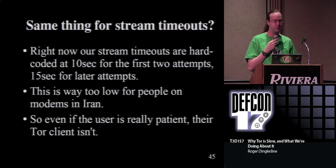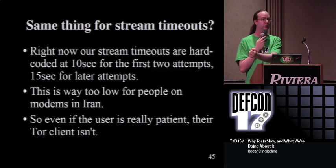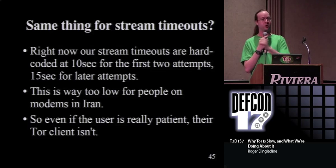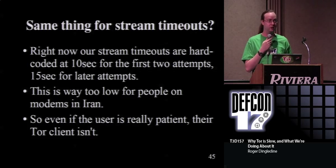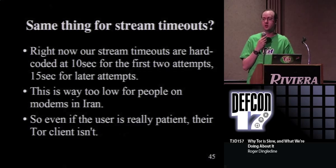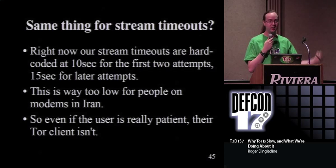We need to do something similar for stream timeouts. Right now stream timeouts are hard coded - if I ask for BBC port 80 and it takes more than 10 seconds to get a connection, I say that circuit sucks, throw it away and try a new one. We've got a fixed timeout of 15 seconds. But if there's some guy in Iran who really wants to get his message out but only has 15 seconds before Tor gives up, he's not going to be able to connect a lot of the time. He was planning to be patient - willing to spend 30 minutes to get his tweet out - but Tor keeps giving up way before he would.